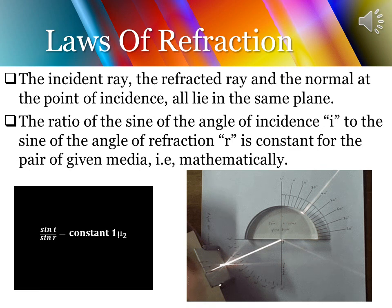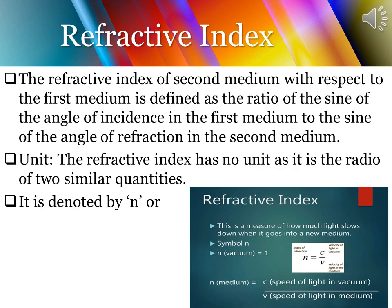Let us be more familiar with the terminology refractive index. In layman's language, it is a measure of how much light slows down when it goes into a new medium. The refractive index of the second medium with respect to the first medium is defined as the ratio of the sine of the angle of incidence in the first medium to the sine of the angle of refraction in the second medium. Refractive index is generally denoted by small n or μ, and it has no unit as it is a pure ratio.